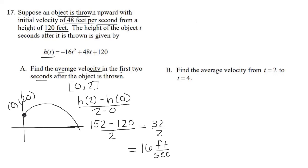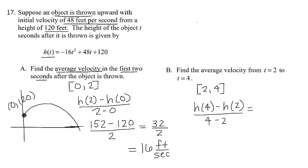For part B, we find the average velocity from 2 to 4 seconds. The setup is H(4) − H(2) over 4 − 2. H(4) is 56, minus H(2) which is 120, all over 2. This gives us negative 32 feet per second.